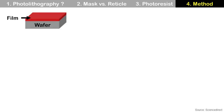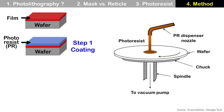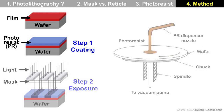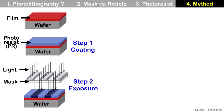This is the simplified process flow of photolithography, starting with a wafer with film on top. Step 1 is Coating — coating photoresist on the wafer by spin coating for liquid-type photoresist. Step 2 is Exposure. Before exposure, there are soft bake and alignment steps. Soft bake is a process to remove remaining solvent from the photoresist, done on a hot plate. Alignment is to align the mask with the wafer to make the pattern in the right place.